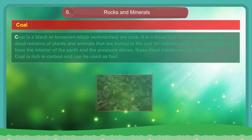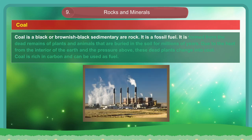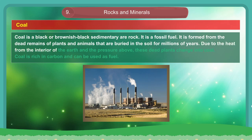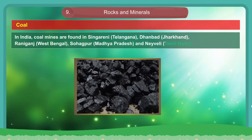Coal. Coal is a black or brownish-black sedimentary rock. It is a fossil fuel. It is formed from the dead remains of plants and animals that are buried in the soil for millions of years. Due to the heat from the interior of the earth and the pressure above, these dead plants change into coal. Coal is rich in carbon and can be used as fuel. In India, coal mines are found in Singreni (Telangana), Dhanbad (Jharkhand), Raniganj (West Bengal), Sohagpur (Madhya Pradesh) and Neyveli.